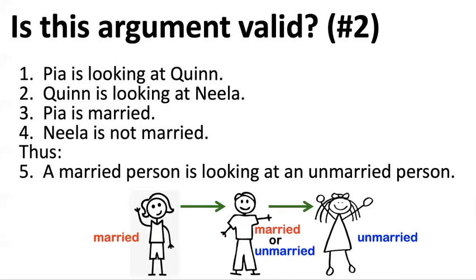Here's where the subtlety comes in. Imagine drawing a picture — we've got three people. Pia is looking at Quinn, and Quinn is looking at Neela. Pia is married, Neela is unmarried. We've encoded all the information from the premises. But look at this extra bit: Quinn is either married or unmarried. We don't know which, but this has to be the case. Sometimes there's information not explicitly stated in the premises but that has to be the case nonetheless — this is a logical fact. Logical truths have to be true even if not stated explicitly as premises.